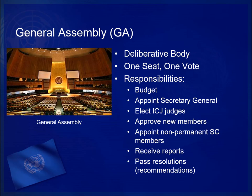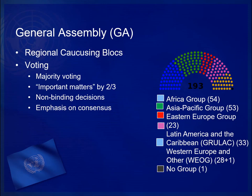The General Assembly is the primary deliberative body of the United Nations and the only part where all states are equally represented, with one state having one vote. The GA is responsible for overseeing the UN budget, appointing the Secretary General upon recommendation of the Security Council, electing judges to the International Court of Justice, approving new members, appointing non-permanent members to the Security Council, receiving reports from other UN bodies, establishing subsidiary organizations, and making recommendations through its resolutions.